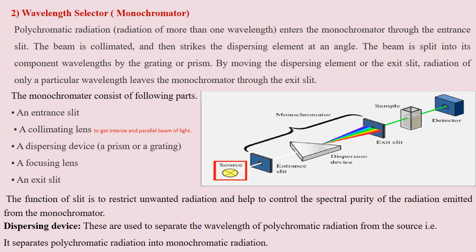After the source of radiation, the next part is the wavelength selector or monochromator. The monochromator is not a single component — it involves several components like slits, collimating lenses which are used to get an intense and parallel beam of light, some dispersing device such as a prism or grating which converts polychromatic light into monochromatic light, and an exit slit. All these together are known as the wavelength selector or monochromator.